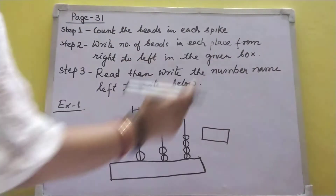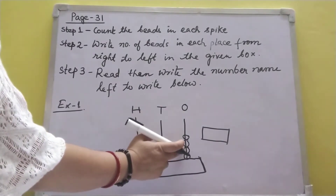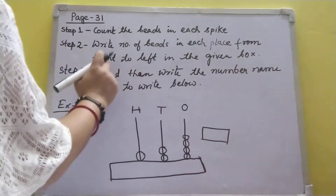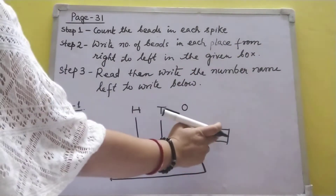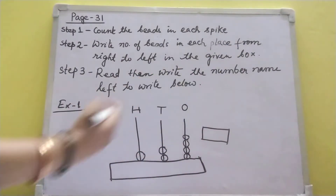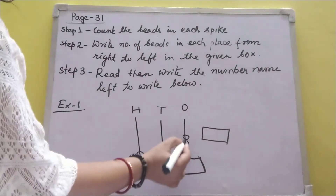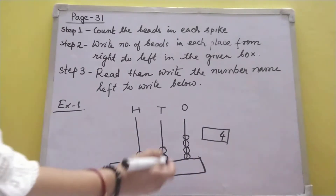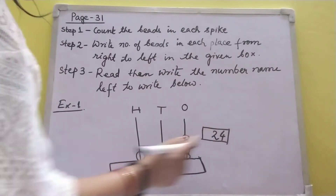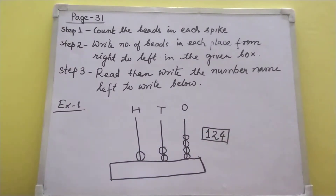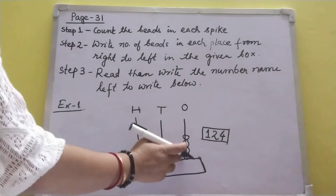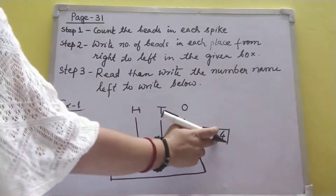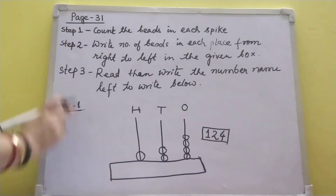Step one: count the bits in each spike. I counted 1, 2, 3, 4. Step two: write the number of bits in each place from right to left. In the ones place: 4. In the tens place: 2. In the hundreds place: 1.